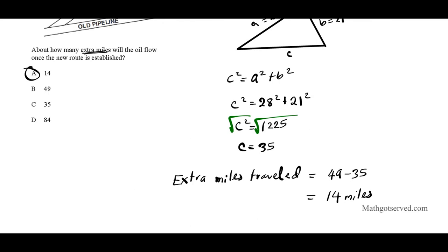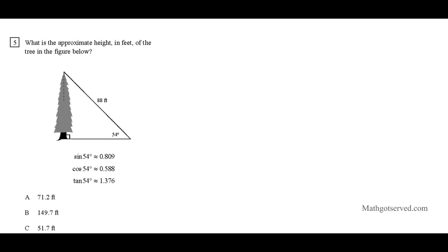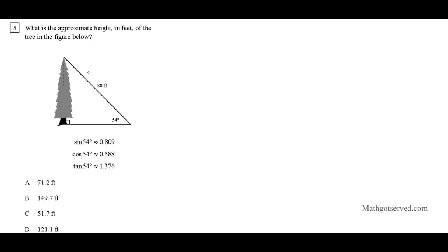Question 5 asks for the approximate height in feet of a tree shown in a figure. We have a right triangle situation with a given angle, so we can use right triangle trigonometry — SOH CAH TOA. We need the height of the tree, which we call x, and we're given the angle of 54 degrees and the hypotenuse.